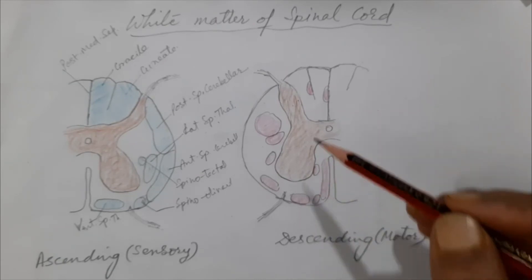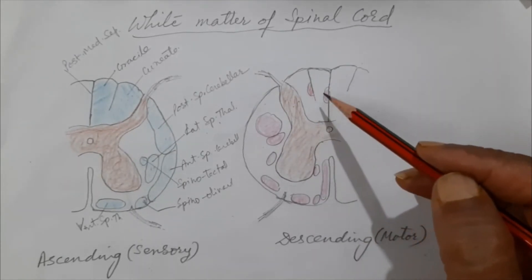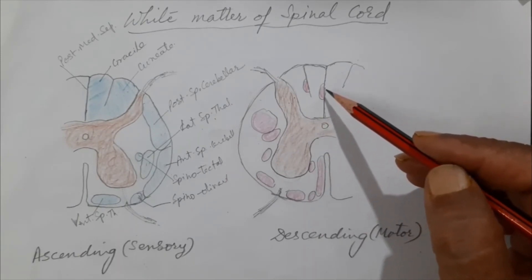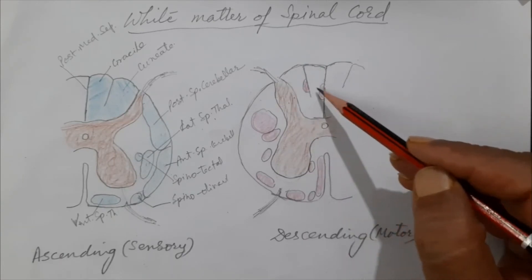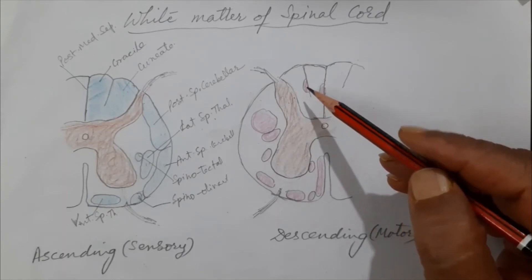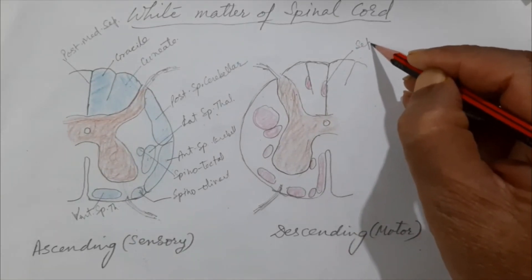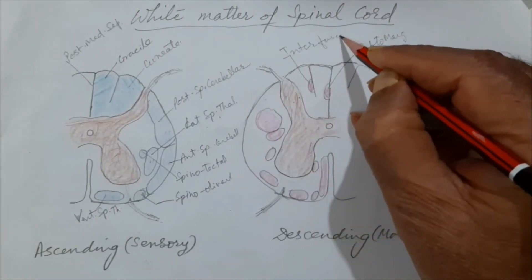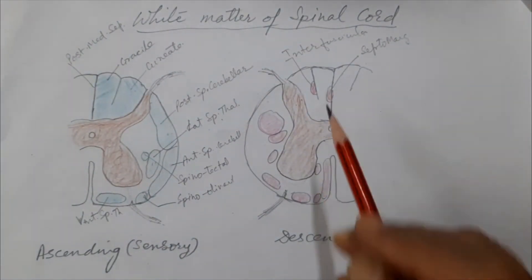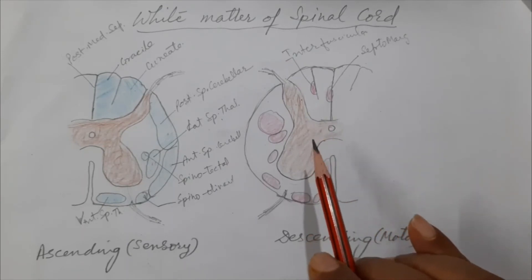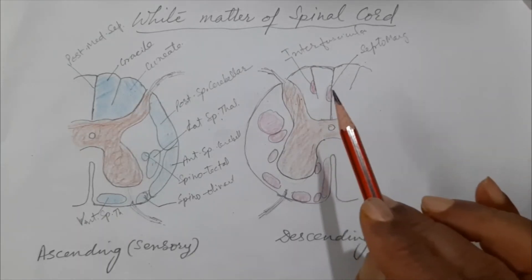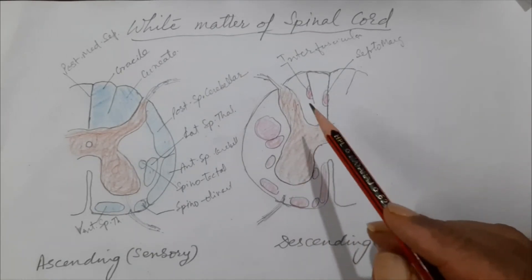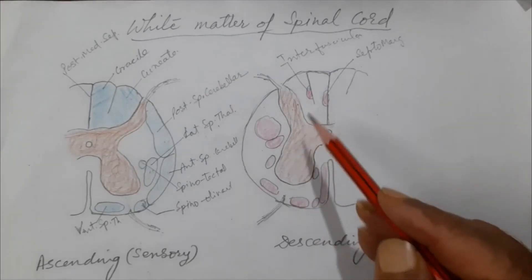In the posterior funiculus, there are two motor tracts: the septomarginal tract and the interfascicularis tract. These are actually intersegmental tracts — they connect neighboring spinal segments with each other, linking neurons of adjacent segments (up to three or four segments above or below). They are motor in nature but confined to short distances within the spinal cord.